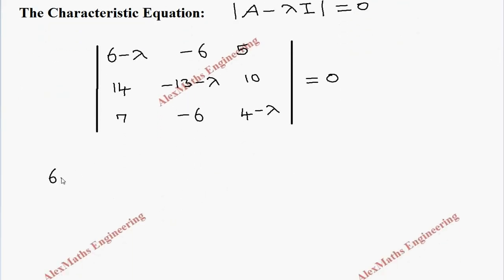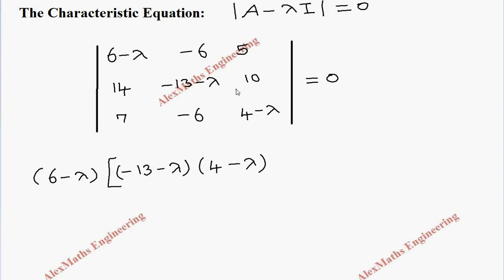Now we are going to expand this. So 6 minus lambda multiplied by these four elements: minus 13 minus lambda into 4 minus lambda, minus of the product which is minus 60, now it becomes plus 60 after subtraction. Then plus 6 — we take the opposite sign; there is already a minus 6, so it becomes plus 6 — and we consider these four elements.